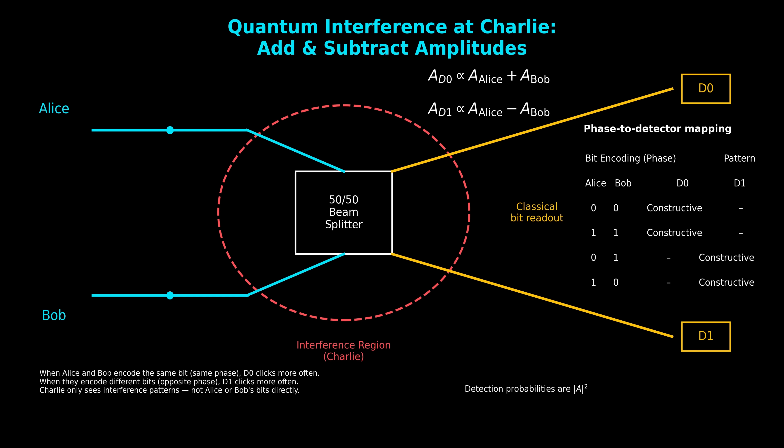To the far right, we have the phase-to-detector mapping — the operational rule that determines which detector tends to click for each phase combination. The left side of the table shows the bits Alice and Bob chose, 0 or 1, encoded as 0 phase or pi phase. The right side shows which detector gets constructive interference.